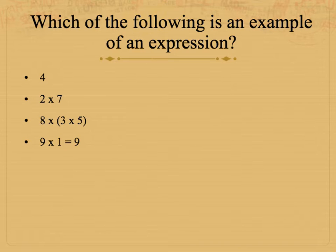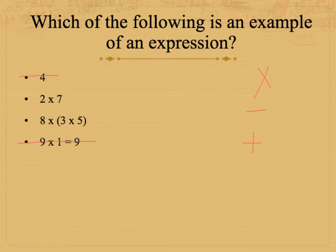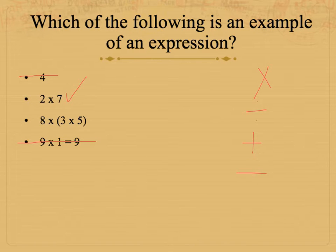Right off the bat, I can cross this one out because it has an equal sign. And I can cross this one out because it doesn't have any operational symbols, like multiplication, division, addition, or subtraction. So I have 2 times 7 — that has numbers and an operational symbol, so this is an expression. And 8 times 3 times 5 in parentheses — this one is also an expression.